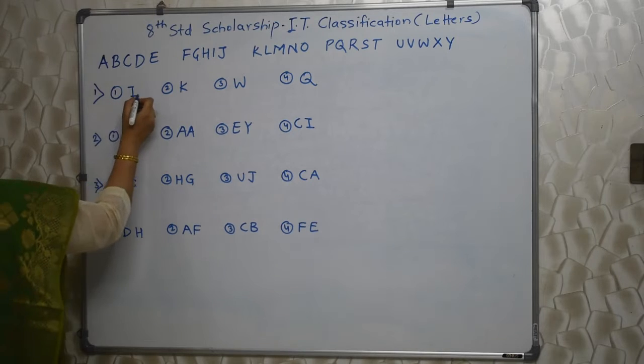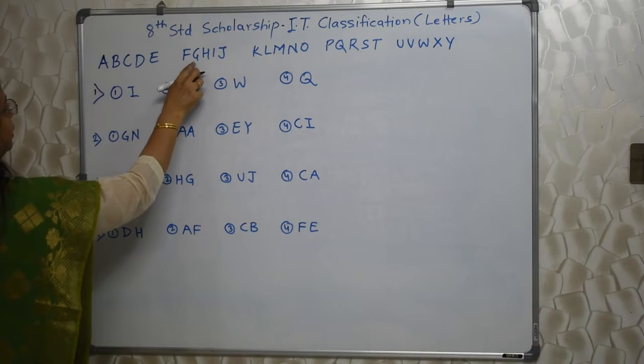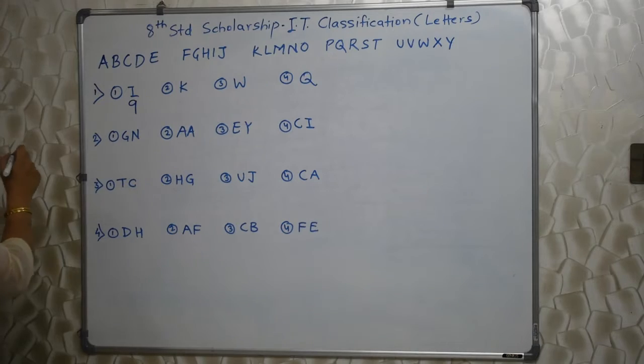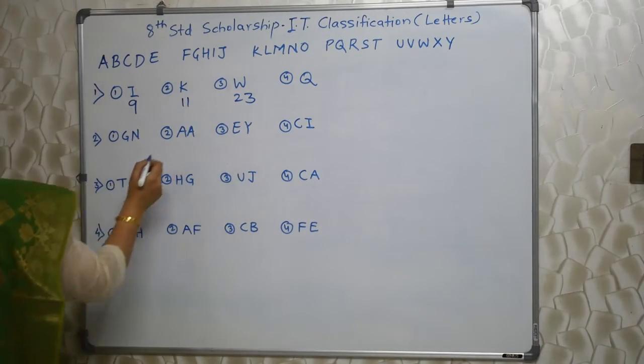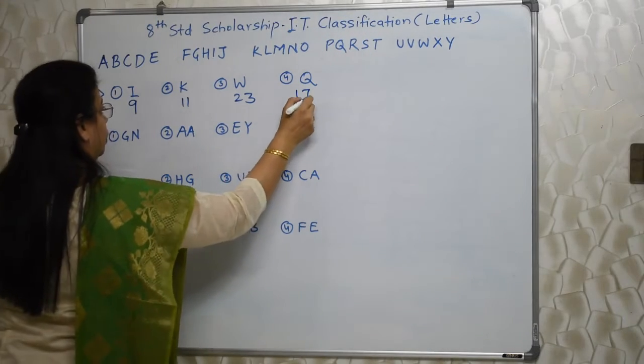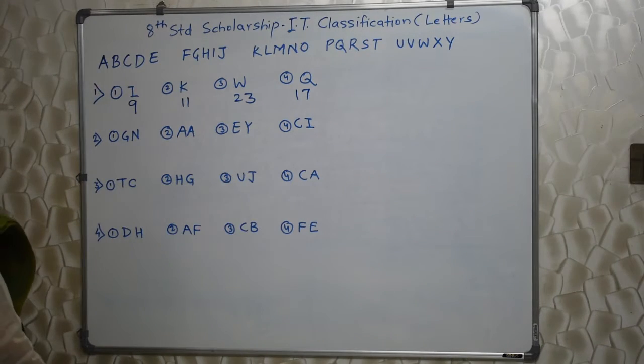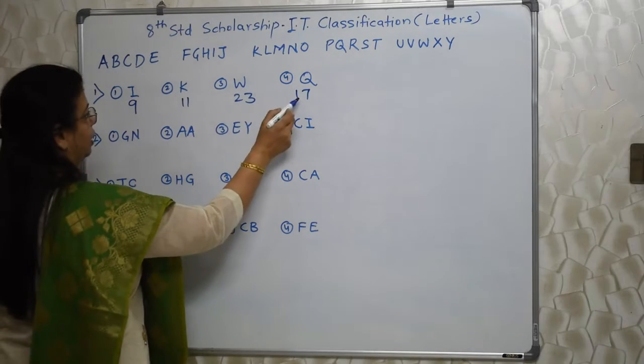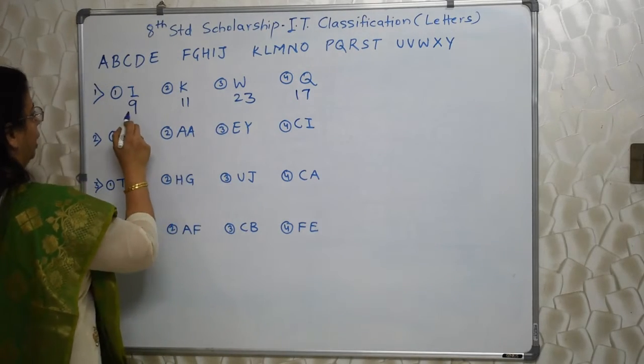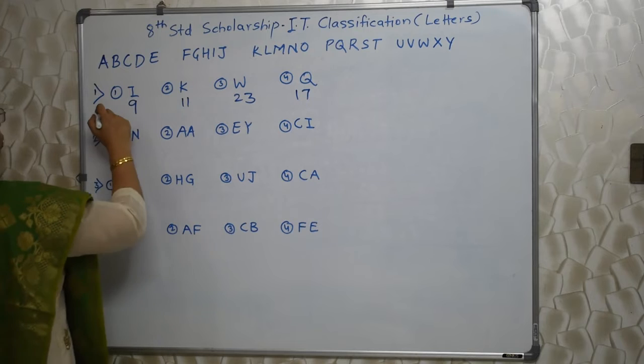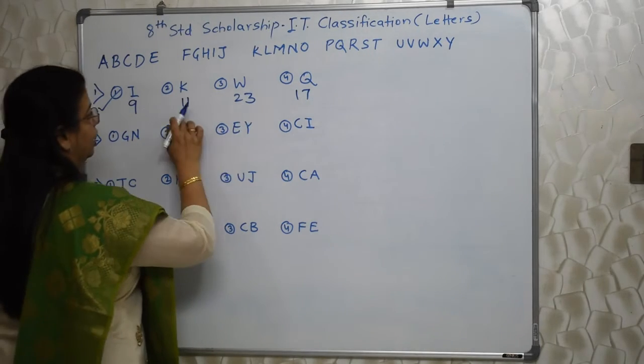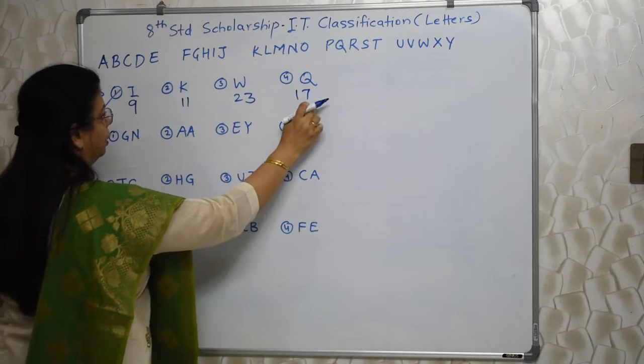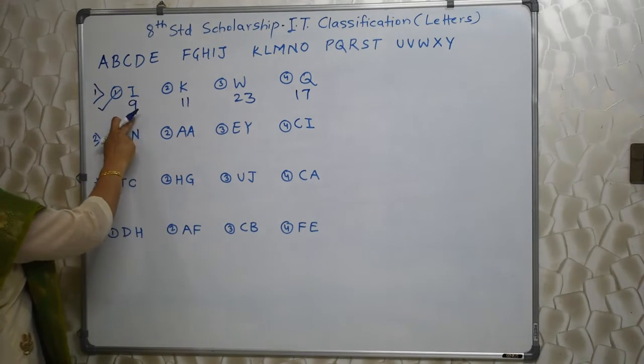Chalo. I is 9. 5, 6, 7, 8, 9. So, this is 9. K is 11. W is 23. And Q is 17. Students who know the prime numbers will immediately know 11, 23, 17 are prime numbers. But 9 is not prime. So, this is odd. We need to find out which one is odd, which one does not follow the class. This is a class of prime numbers. So, this is not prime. So this is odd.